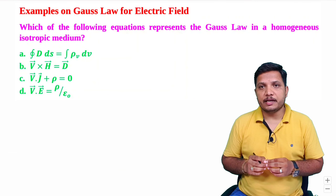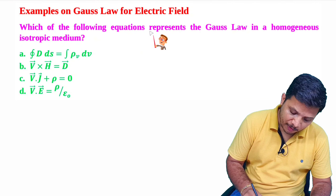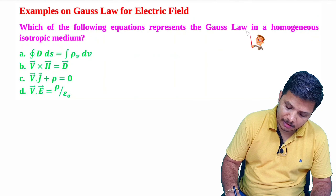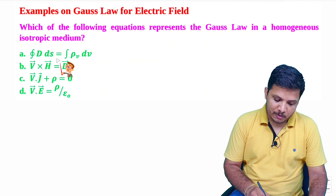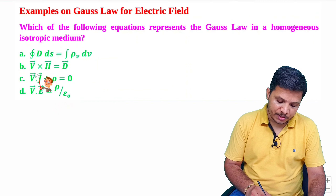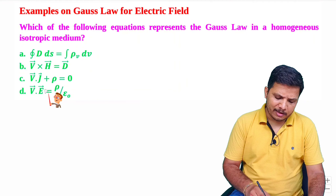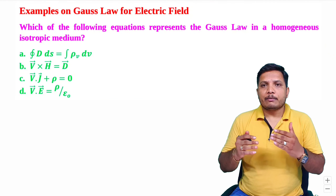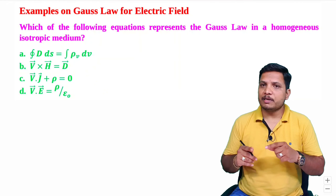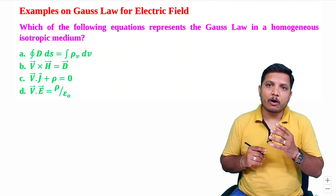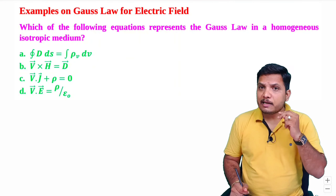Let us see the first question. The question asks which of the following equations represents Gauss's law in a homogeneous isotropic medium. There are four equations — some are differential equations and some are integral equations. Basically, two equations that one should know regarding Gauss's law for electric field: one is the integral form and the second is the differential form.